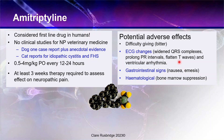Most cat owners find giving amitriptyline extremely difficult, and many dog owners as well, because it is a foul-tasting drug. Especially if they bite down on it — which is very easy to do if you're a cat — they will profusely salivate. And once they've tried it the first time, it'll be even more difficult to give that drug.